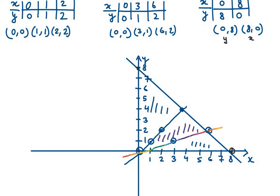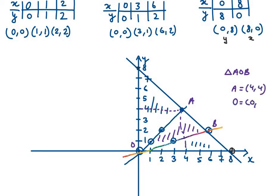I'll mark the vertices as O, A, and B, giving us triangle AOB. Vertex A is at (4,4), O is the origin at (0,0), and B is at (6,2). So the three vertices of the triangle formed by the given lines are A(4,4), O(0,0), and B(6,2). That's the answer for question number 2.